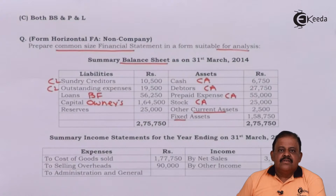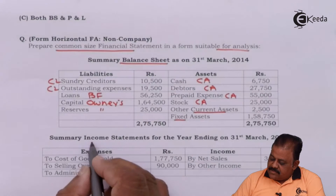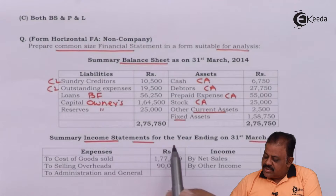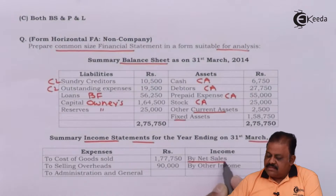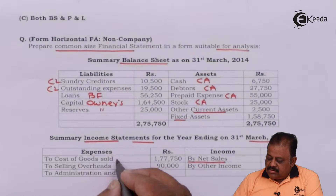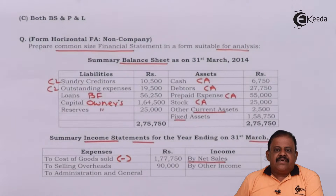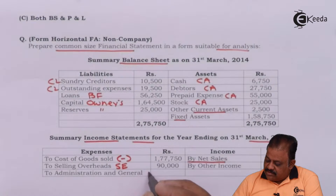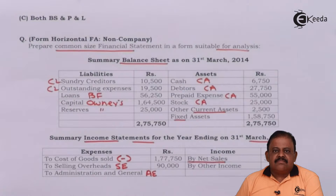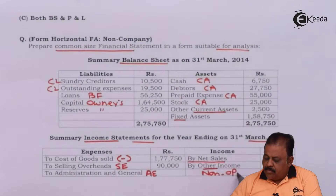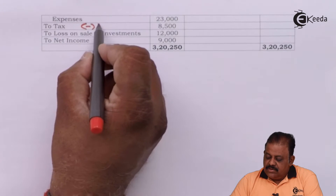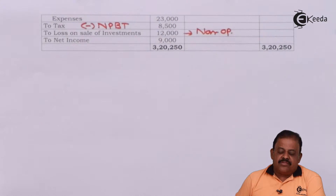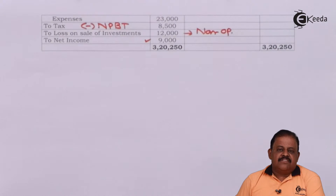Capital is listed under owner's funds, and reserves are also under owner's funds. The summary income statement for the year ending 31st March 2014 begins with net sales, then cost of goods sold deducted to arrive at gross profit. Selling expenses and administration and general expenses form operating expenses. Other income is non-operating income, taxes are expenses deducted from net profit before tax, and loss on sale of investments is a non-operating expense. Net income is the surplus.